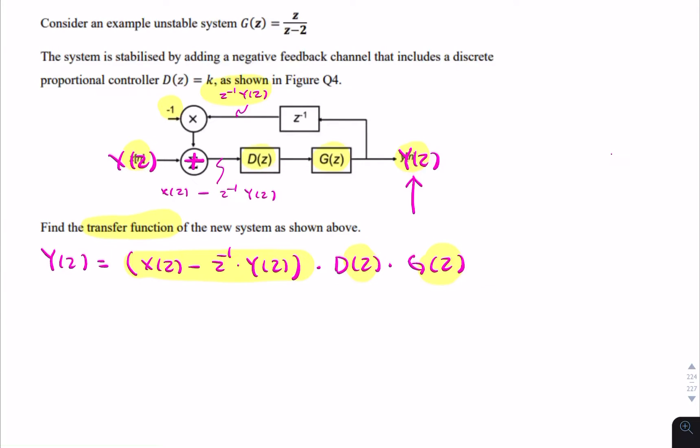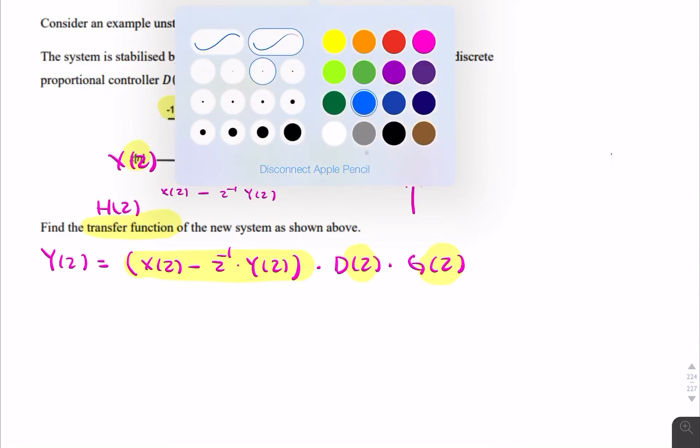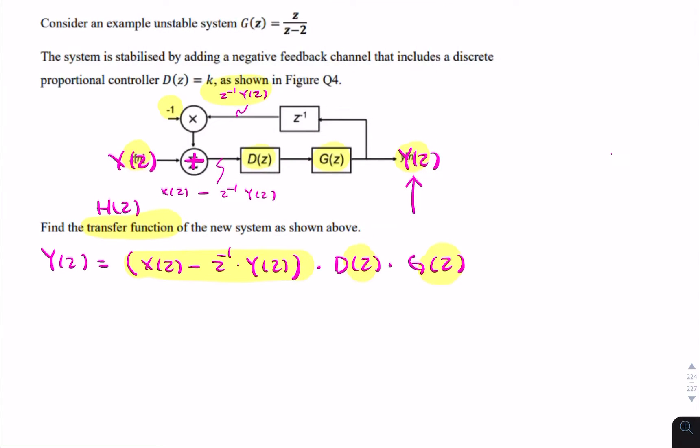So the question is find the transfer function, and that's h of z. So what we want is the ratio of the two. So let me try to simplify it like this. If I take y of z as a common factor, it would be 1 plus z to the minus 1 d of z g of z equals x of z d of z g of z.